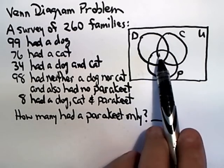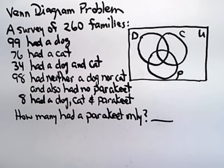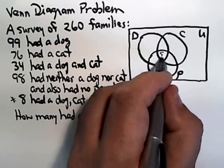So, as usual, if you can start in the innermost region, you're better off. That's where the dog, cats, and parakeets overlap, and that's where we know there were 8. 8 had all 3.